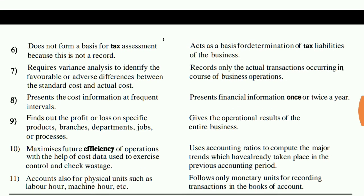The ninth point: cost accounting finds out the profit or loss on specific products, branches, departments, jobs, and processes. You can find out how much profit each branch, department, job, or process is making. Whereas financial accounting gives only the operational result of the entire business as a whole. In financial accounting, you cannot get detailed information per product, branch, department, job, or process — for that, you need to follow cost accounting.